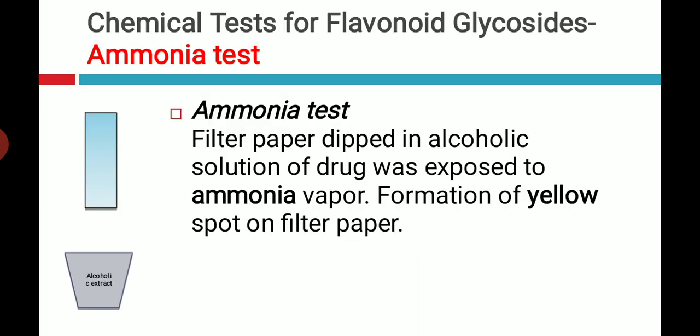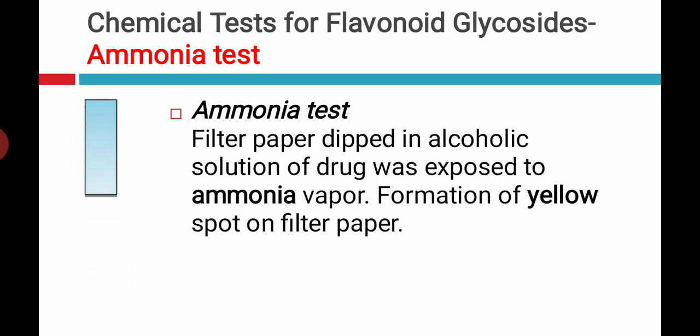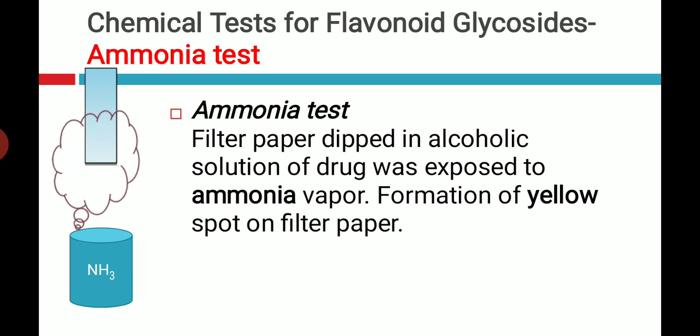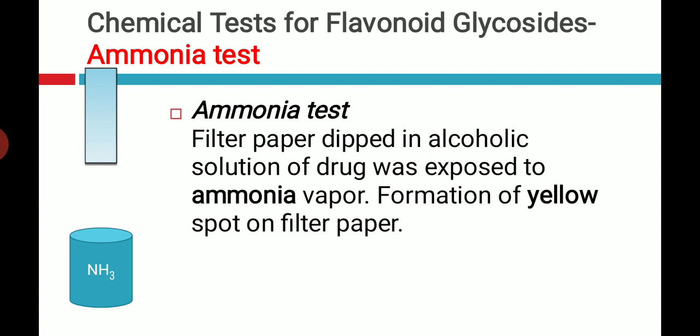Let us start. The first test for flavonoid glycosides is the ammonia test. In this, you have to take the alcoholic extract of a flavonoid-containing drug and dip a filter paper into that alcoholic extract. Then the wet filter paper has to be exposed to ammonia vapors. The ammonia vapors will convert the extract, which contains flavonoid, into a beautiful yellowish color.